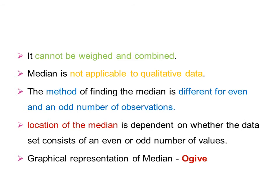The location of median depends on whether the dataset consists of an even or odd number of values. If the series is even, we handle it differently from odd. The graphical representation of the median is called an ogive. You can refer to all these characteristics for further study.